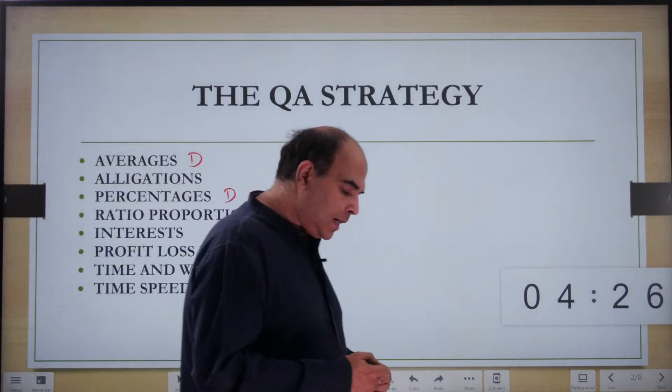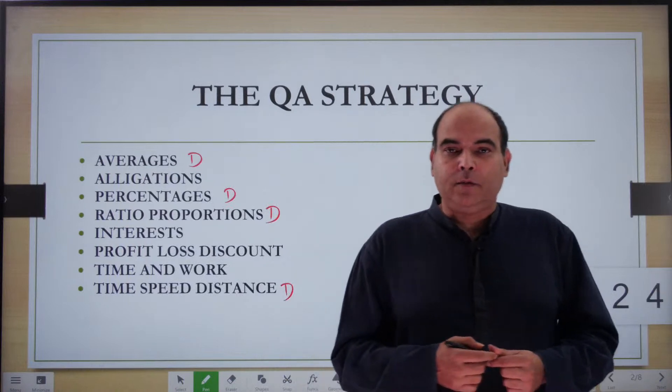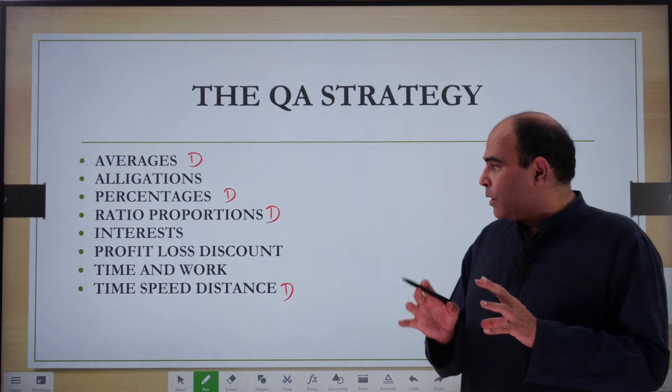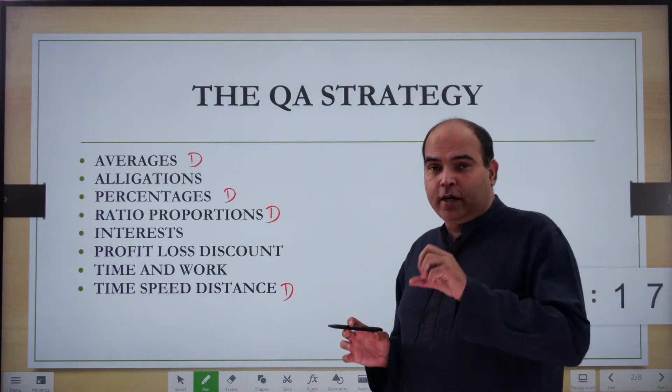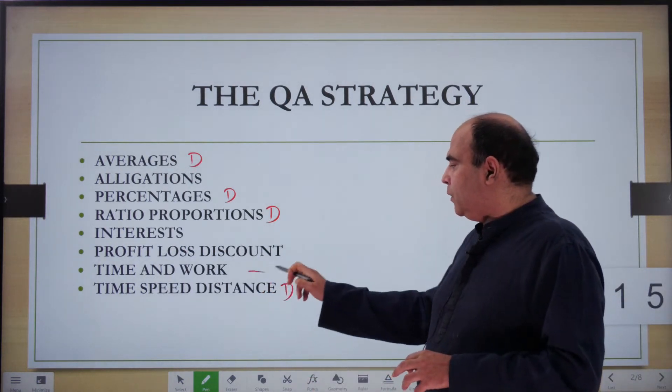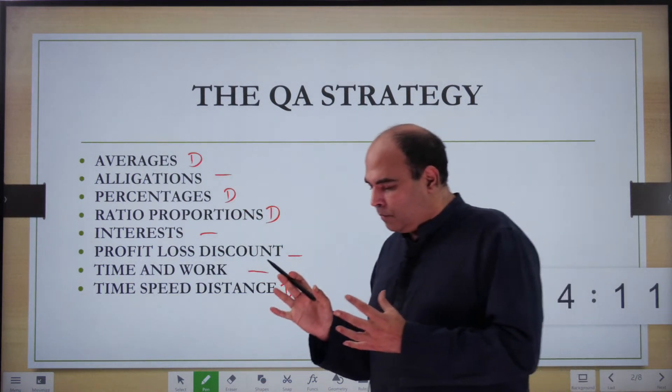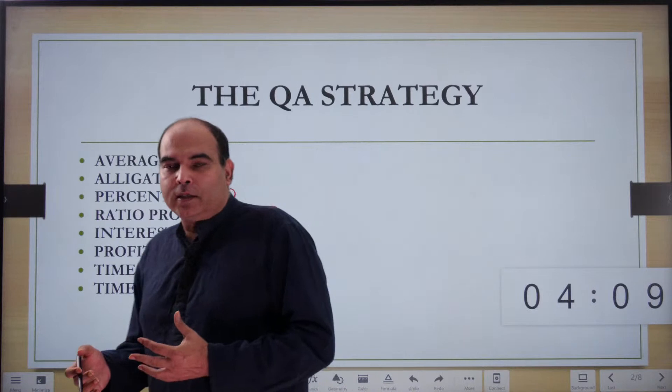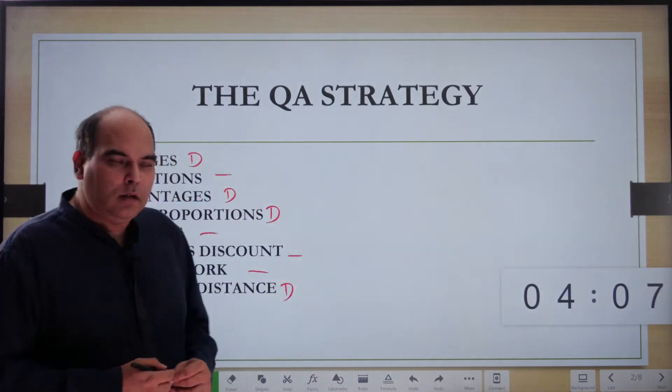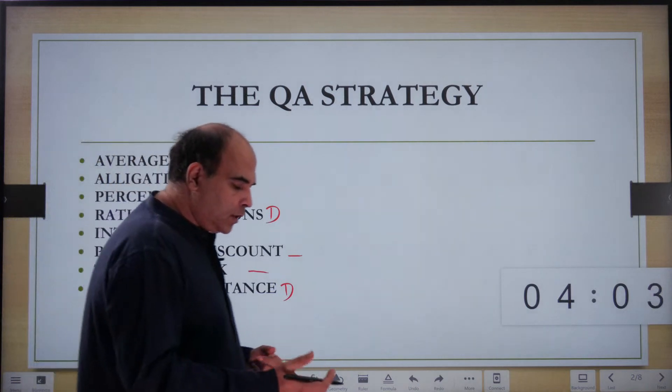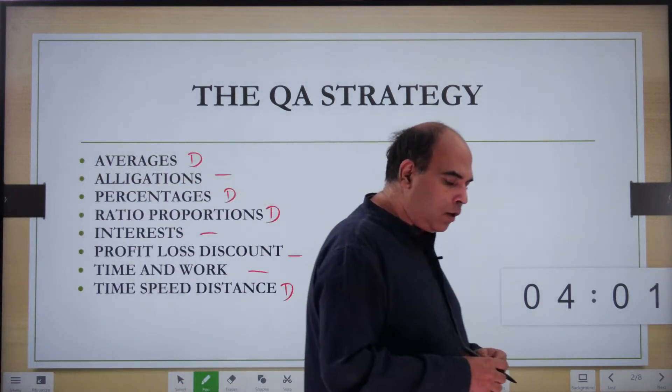Slightly shallower chapters - I'm not saying they are shallow chapters per se, but slightly shallower than this where you don't need that deep dive - are these four chapters: alligations, interests, profit loss discount, and time and work. In these chapters you can actually just do the question bank once and maybe revise it once.